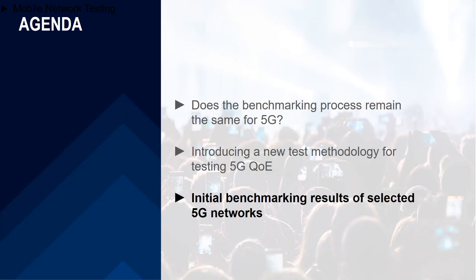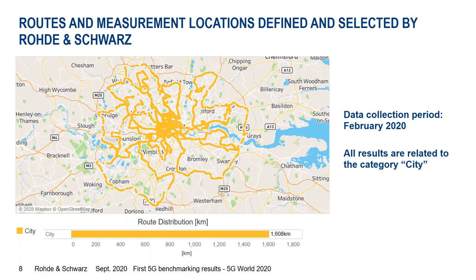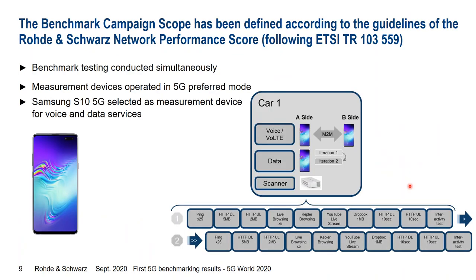Let's focus on initial benchmark results of 5G networks. 5G World is normally London, so we used data from the city of London, collected in February 2020. We drove 1,600 kilometers in a drive test, and all results are presented in the city category to keep visualization simple. The benchmarking campaign used our network performance score following the ETSI technical report. Measurement devices were the Samsung Galaxy S10 5G in 5G preferred mode for voice and data services, including HTTP downlink and uplink 10-second capacity tests and interactivity tests.